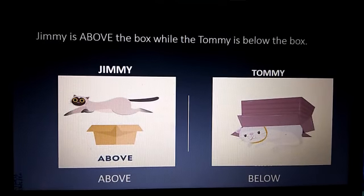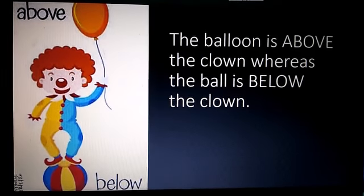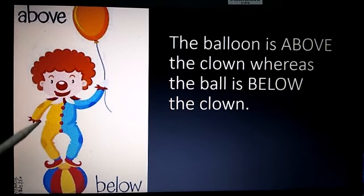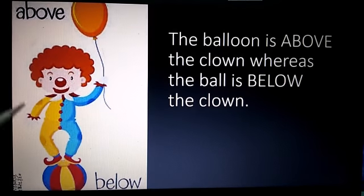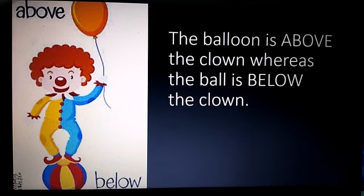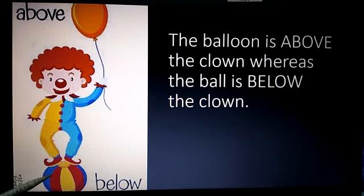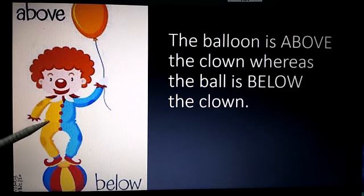Moving to our next example. As you can see, there is a clown holding a balloon and balancing himself on a ball. The balloon is above the clown whereas the ball is below the clown.